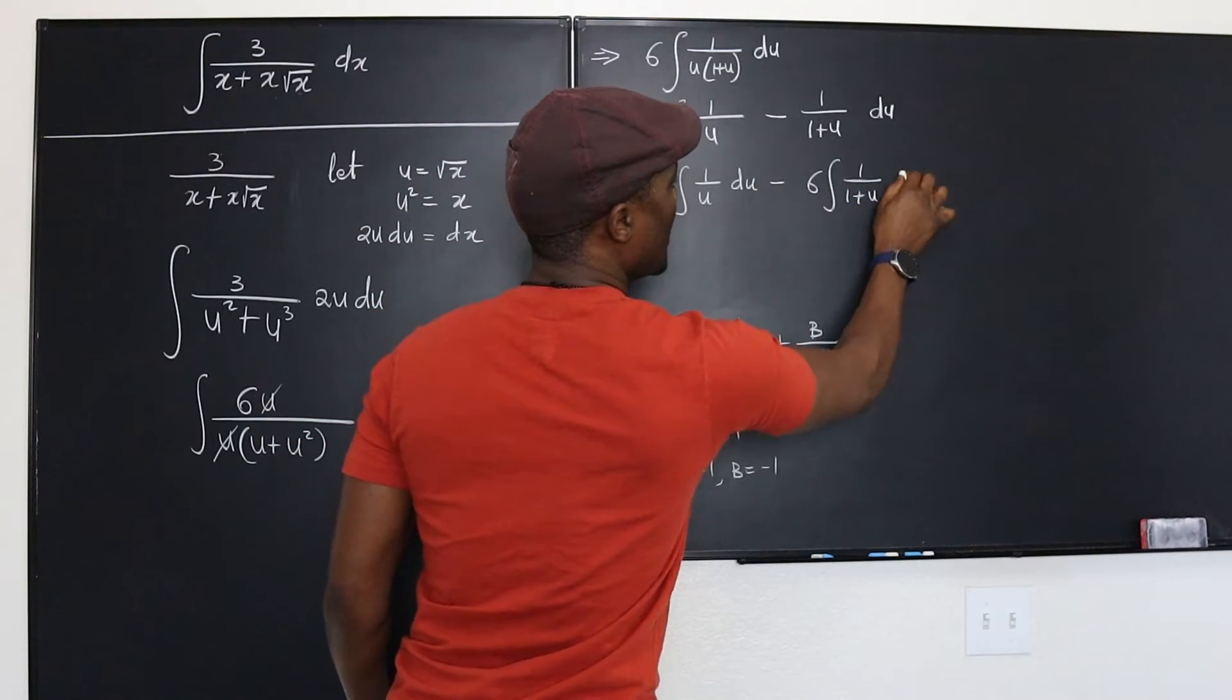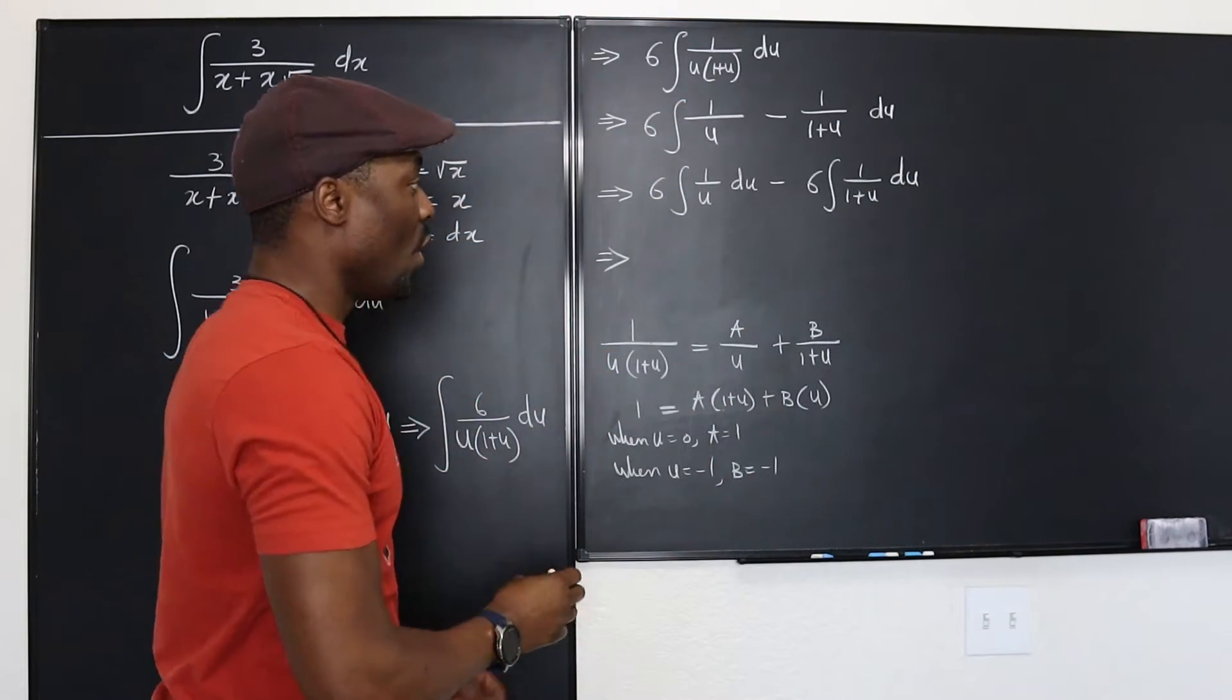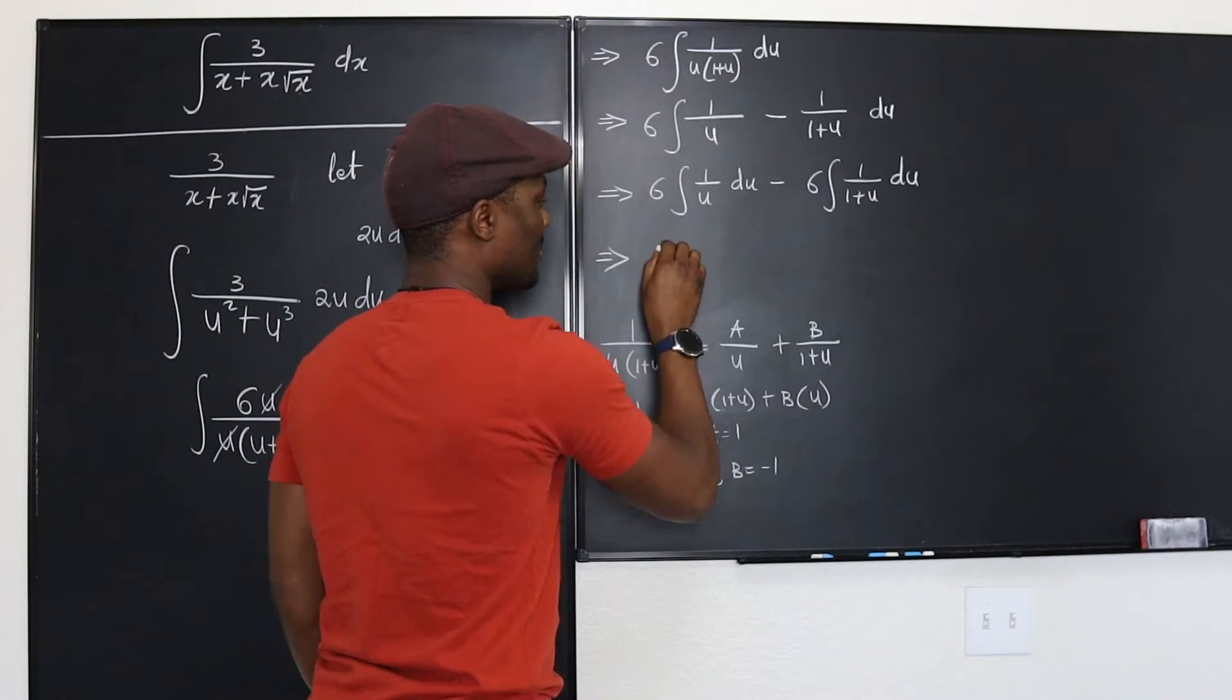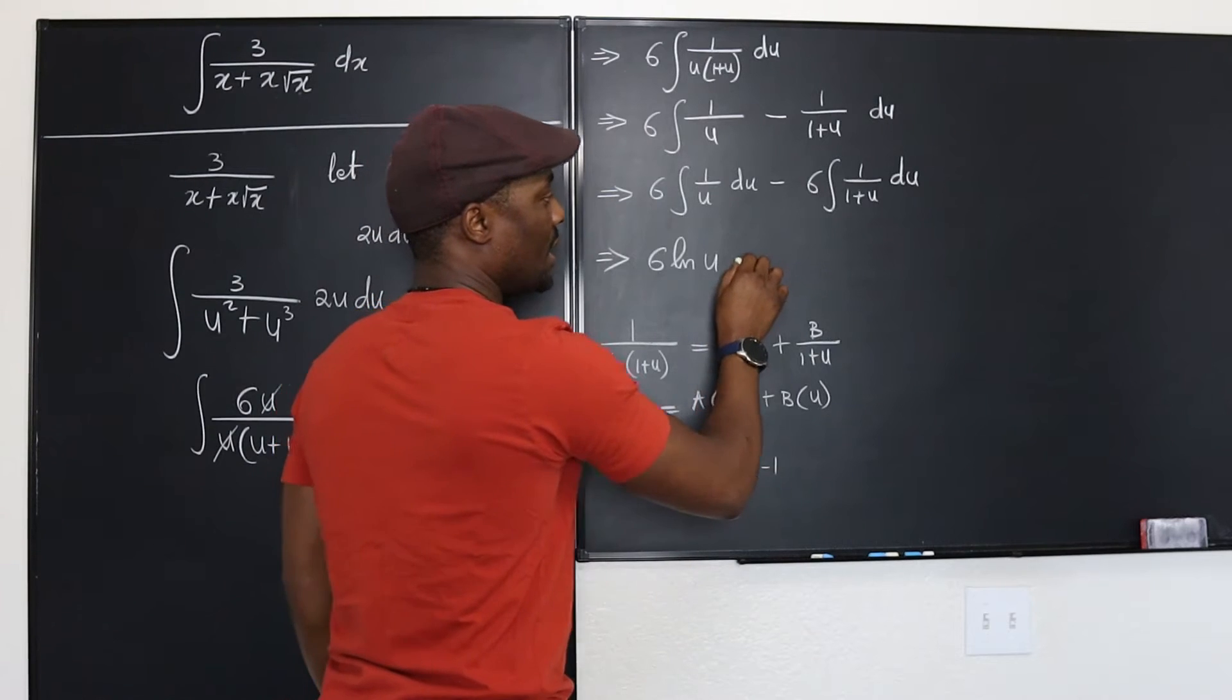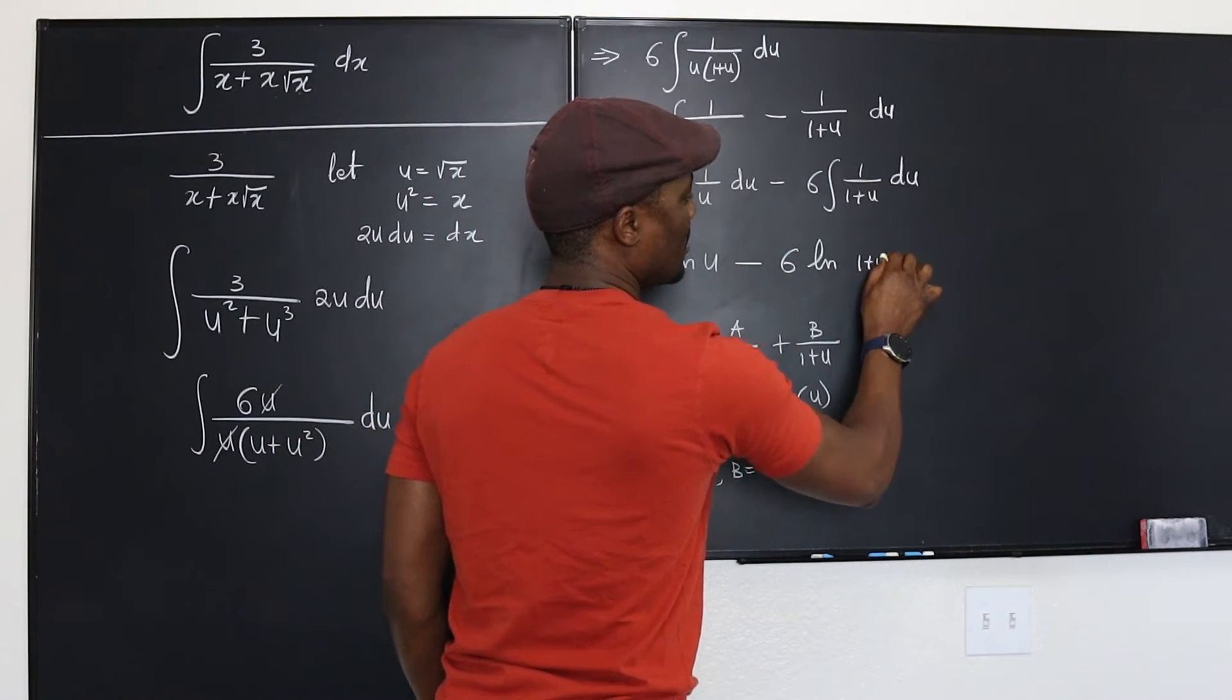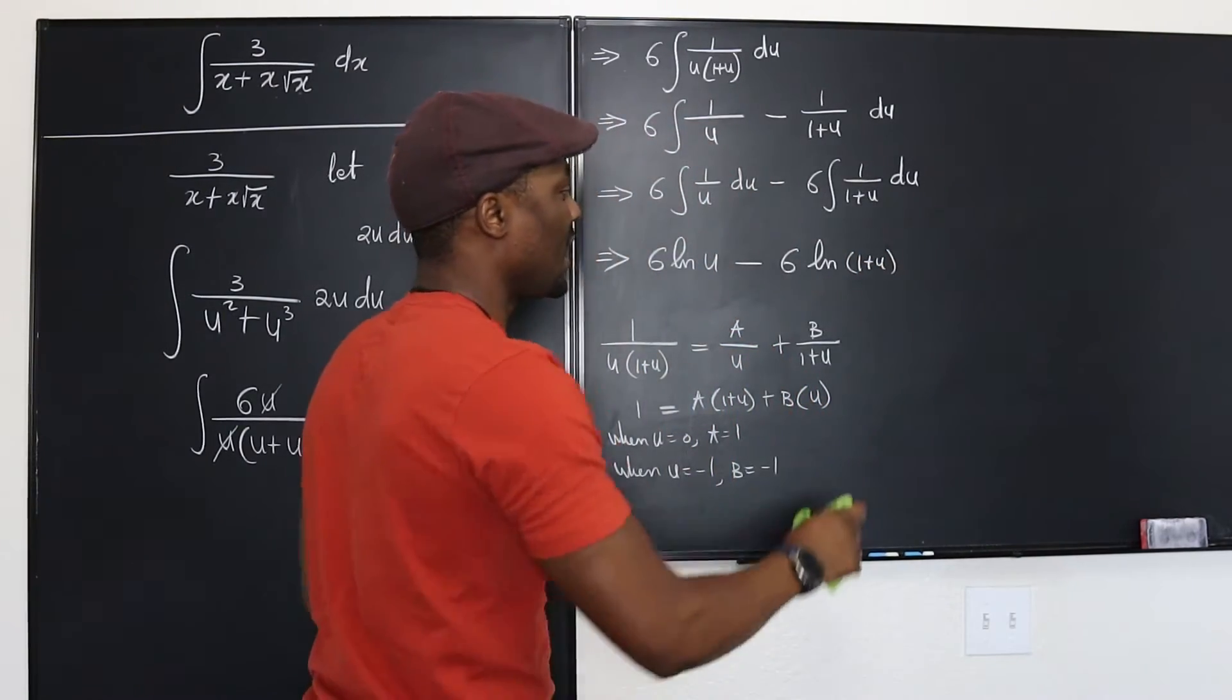Ladies and gentlemen, what we get is 6 ln u minus 6 ln 1 plus u absolute value. Let's use the absolute value side.